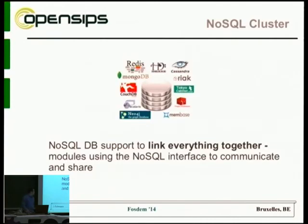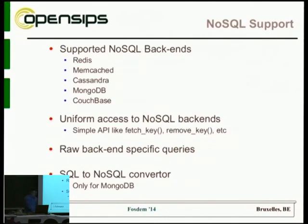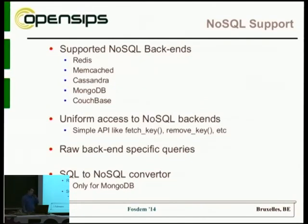This was not an easy thing to do. There are lots of NoSQL solutions, and there is no standard query language for them, so we had to implement various connectors for all of them. Right now we support Redis, Memcached, Cassandra, MongoDB, and Couchbase. Since we lacked a standard query language, we tried to make a uniform API for things commonly used while writing your routing script — for example, fetching a key or removing a key from the sharing engine.